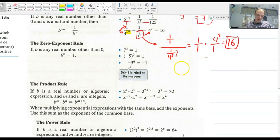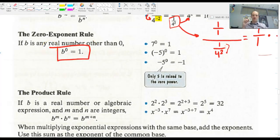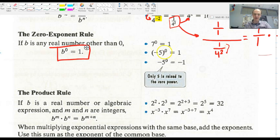All right, next rule. Zero exponent rule. If b is any real number other than 0, b to the 0 equals 1. There's a really lovely proof for justification of that. I'll try to give you in class. We won't do it here. Just know when you have anything to the 0 power, everything inside those parentheses becomes 1.